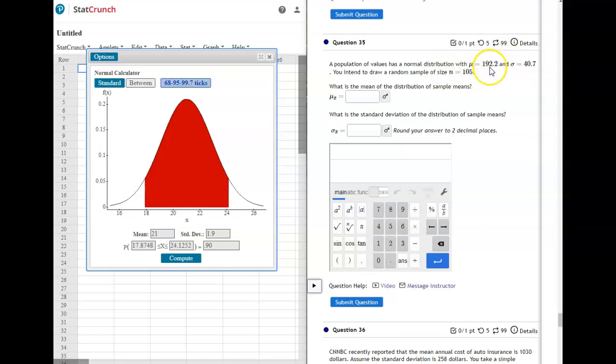With a mean of 192.2 and a standard deviation of 40.7, you intend to draw a random sample of size n equals 5. What is the mean of the distribution of the sample mean? When it asks you that, that's your clue that you use the central limit theorem.